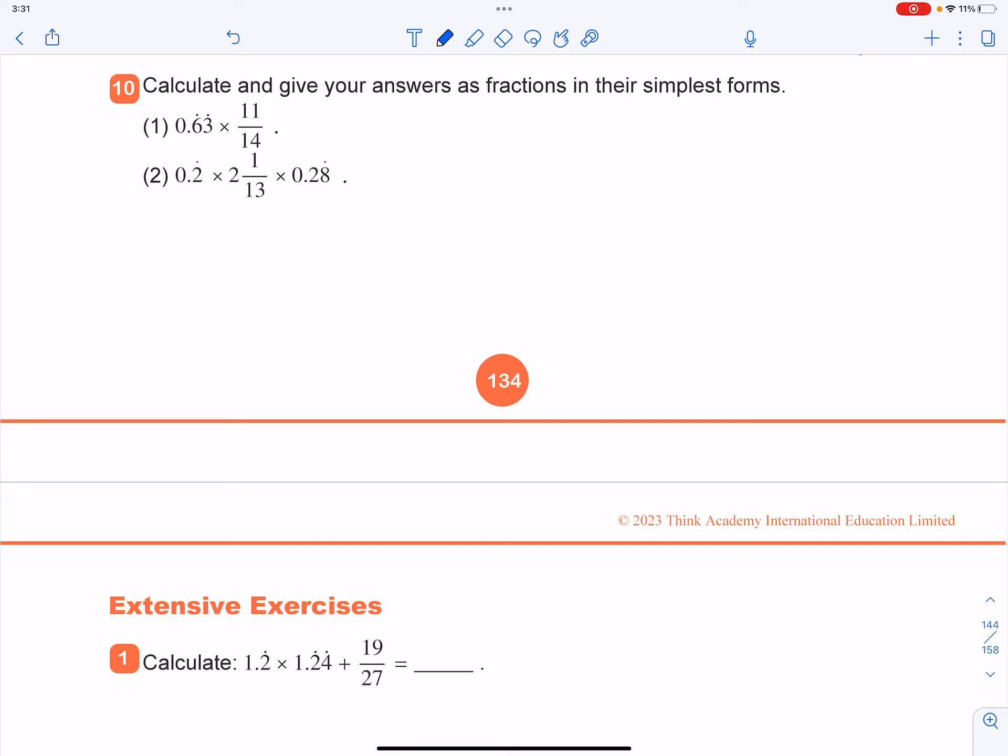Basic exercise is question number 10. Calculate and give your answers as fractions in their simplest form. The first one will be 63 over 99 times by 11 over 14.